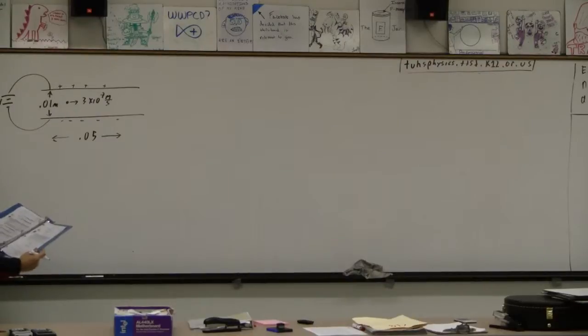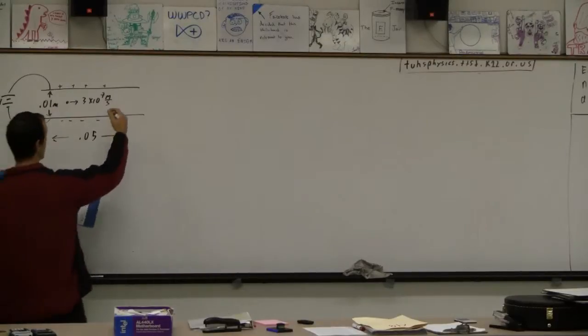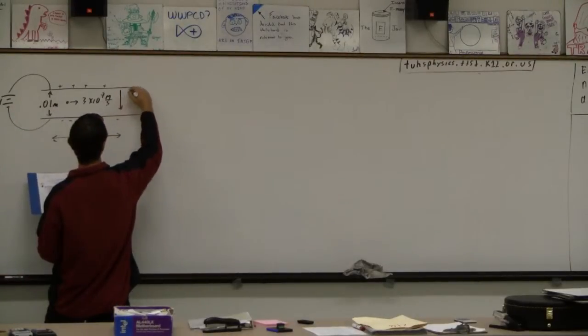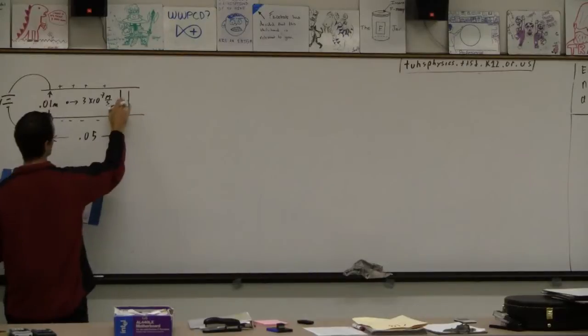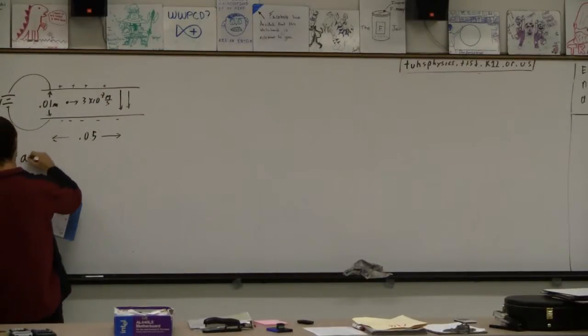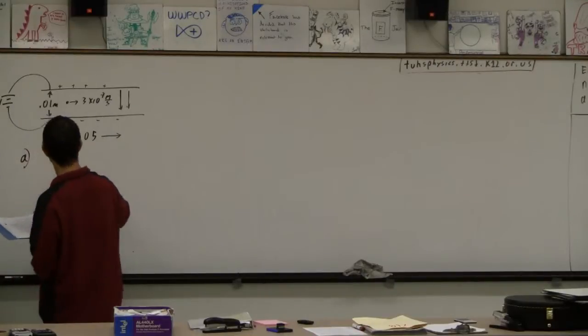So, the first question is determine the magnitude of the electric field in the region between the plates and indicate its direction on the figure above. Well, the direction's easy. What would positive charge do? Positive charge is going to go down, from positive to negative. And then calculate the electric field.